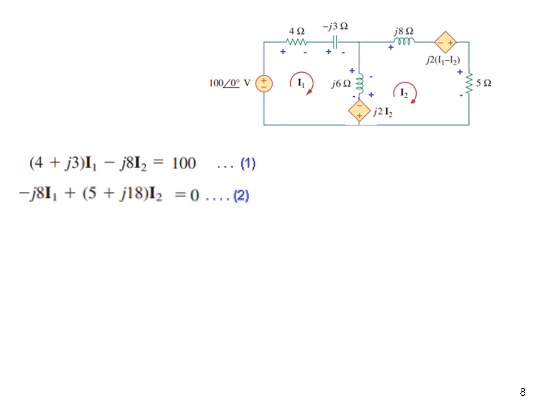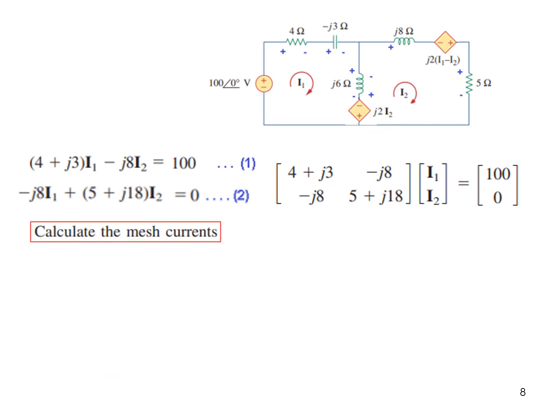And now we have two equations. We can easily solve these with the help of a matrix. So this is the matrix equation now. And we know that I1 is delta 1 over delta. I2 is delta 2 over delta. And delta is this part.